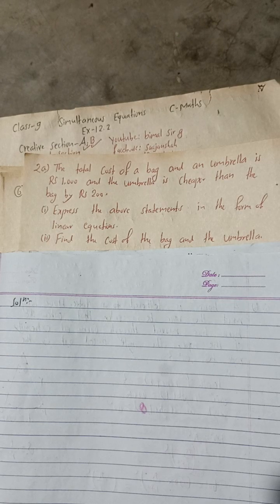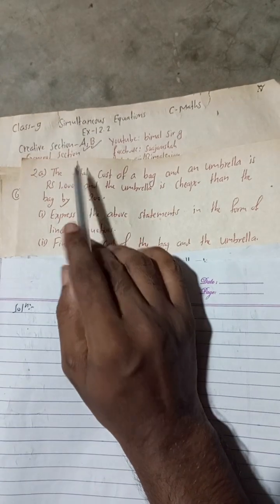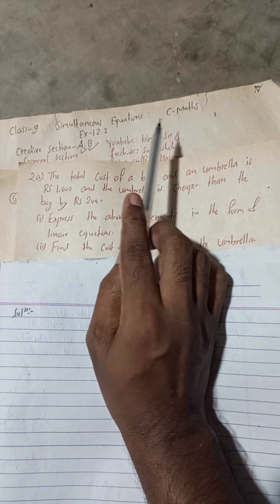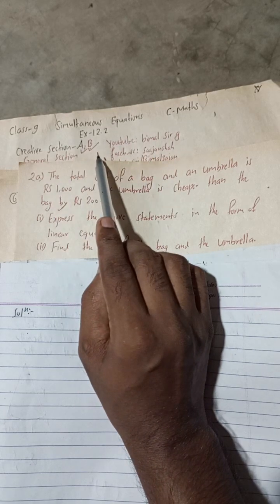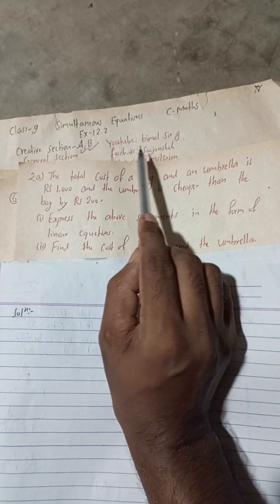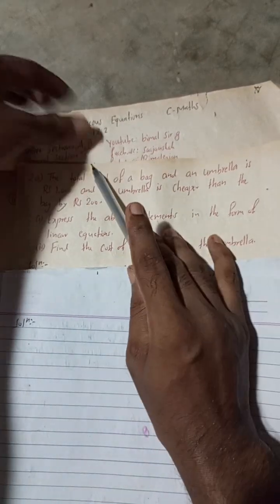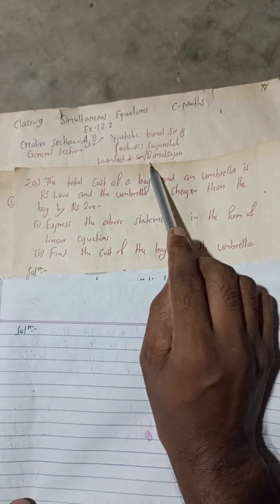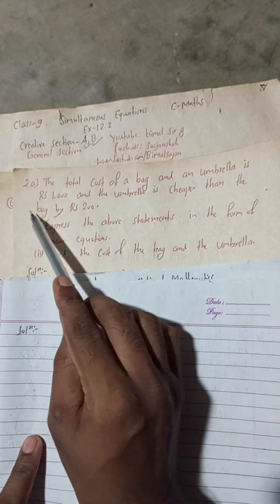Hi everybody, welcome back to Bimalsarji YouTube channel. This is question number 2A of the general section, simultaneous equations, class 9 compulsory mathematics. Solutions for creative section A and B have already been uploaded on my YouTube. You can check the playlist of Bimalsarji YouTube channel, and my Facebook ID is www.facebook.com/bimalsarjan.